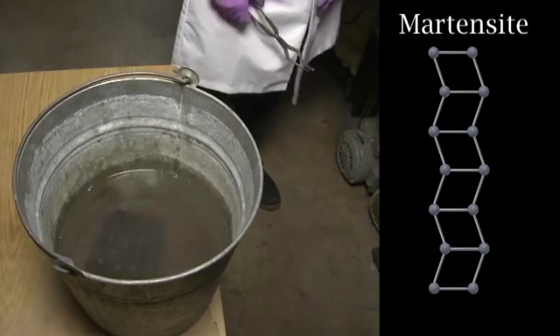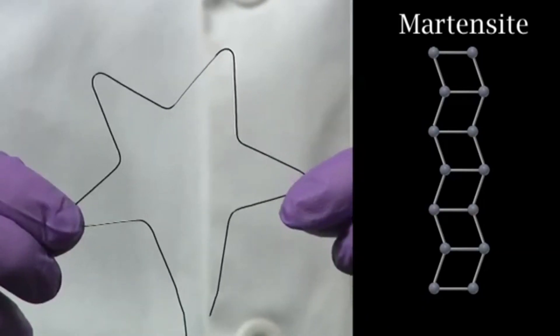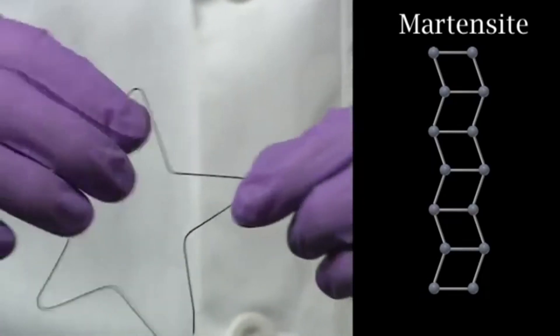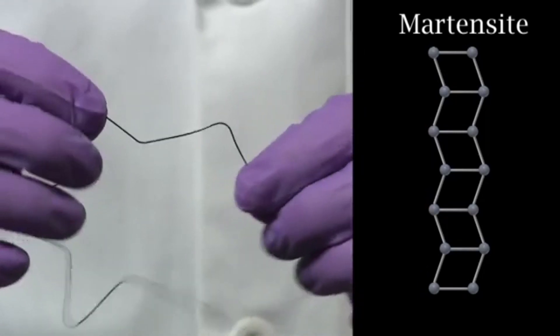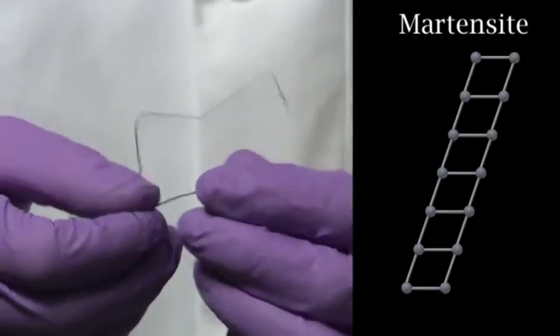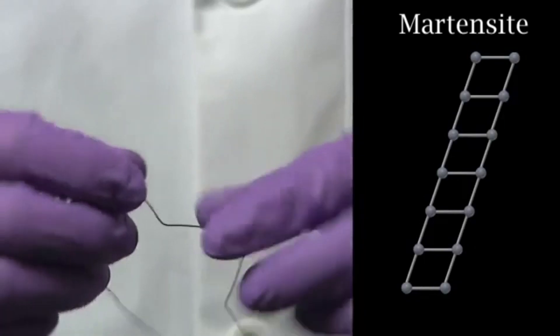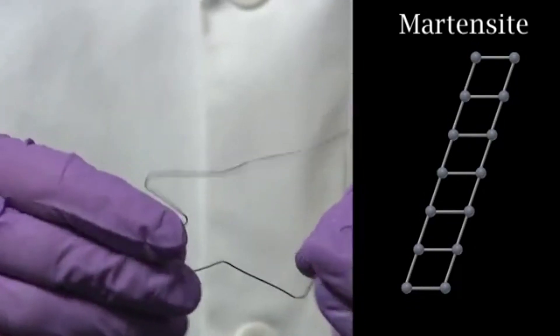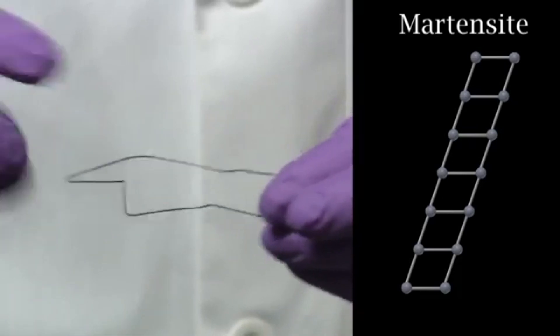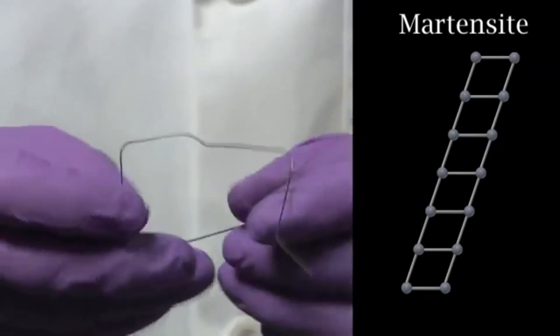In the graphic, you can see that the atoms have the martensite structure, but they align in a zigzag pattern, so that the overall shape does not change. Now, we can bend the wire however we like. The material does not change phase, but the alignment pattern changes slightly, so that they align in one direction.